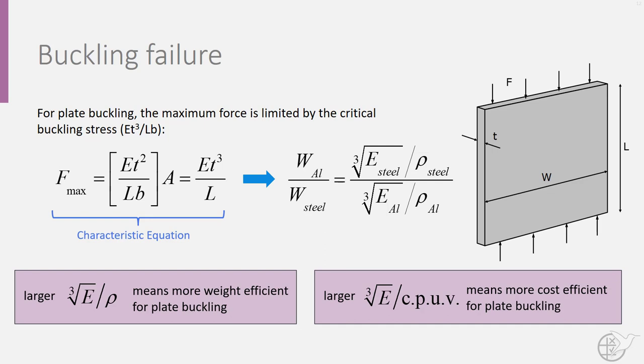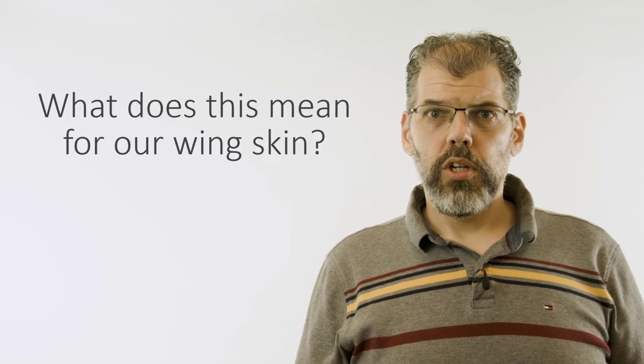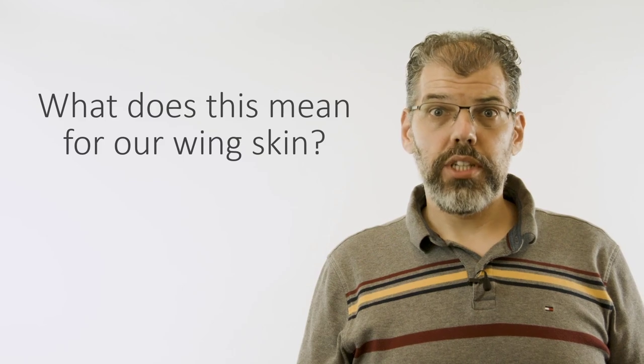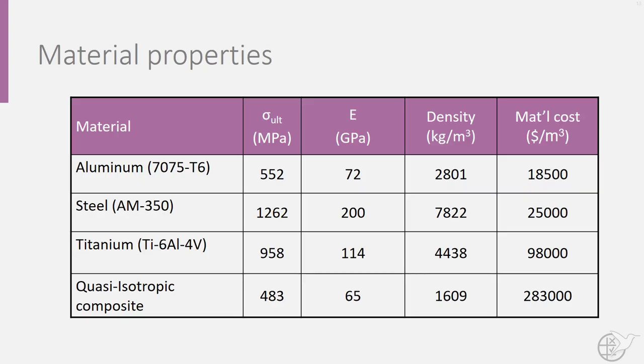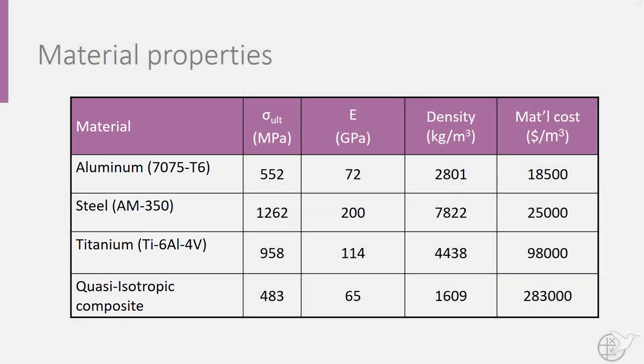There are many different characteristic equations for different structural capabilities and design constraints. So what does this mean for our wing skin example? We can take these four selection criteria and evaluate them for different materials. For our comparison, we will look at the four materials shown here in this table. You can pause the video here if you want to take note of the material properties before we insert them into our criteria and validate the math for yourself.